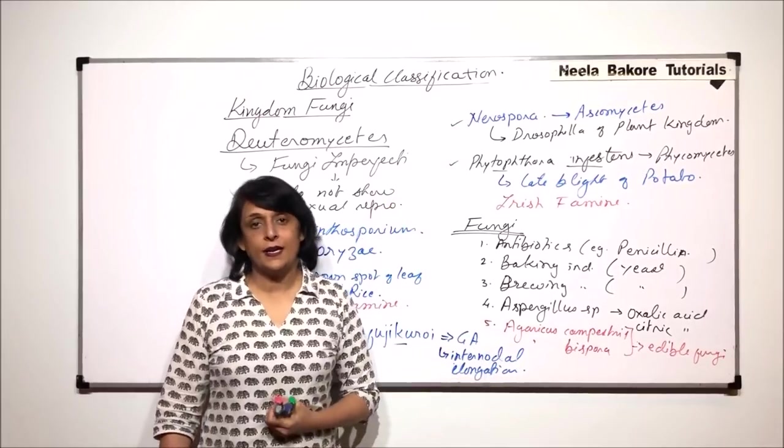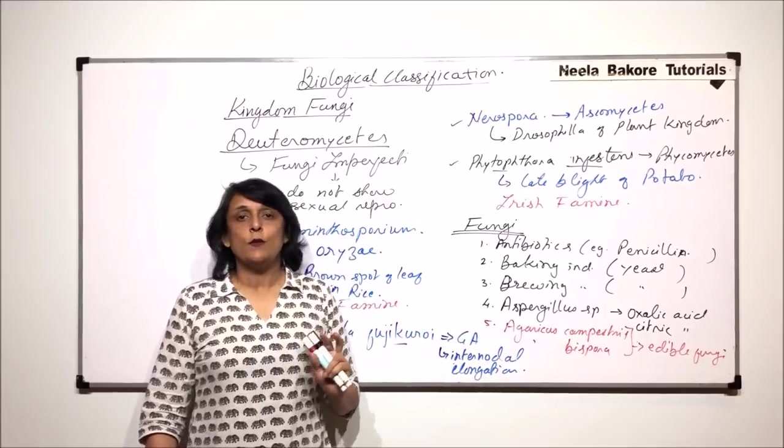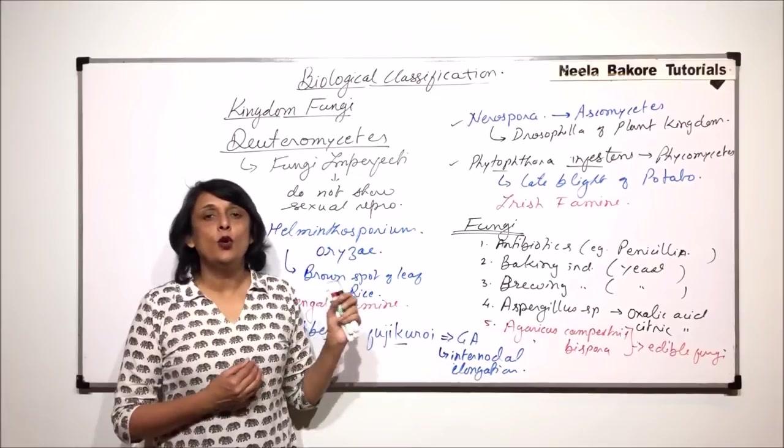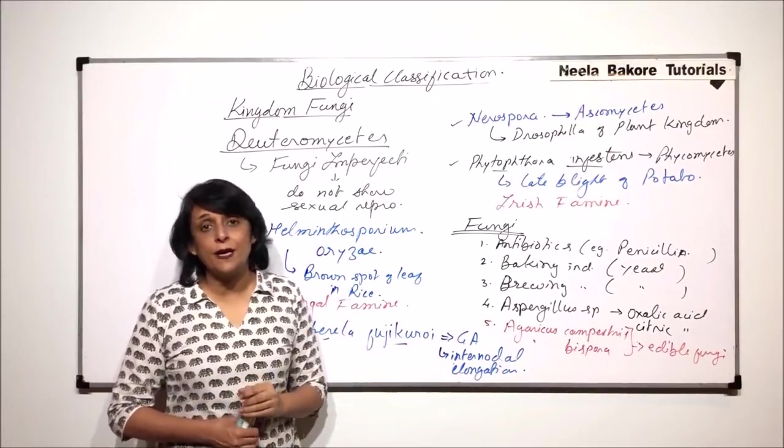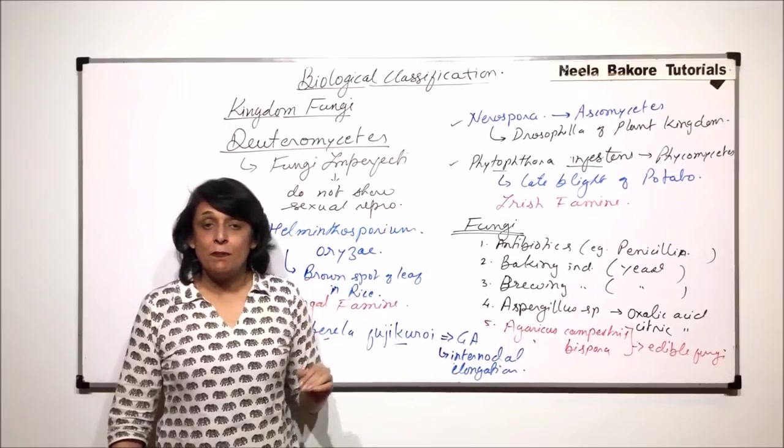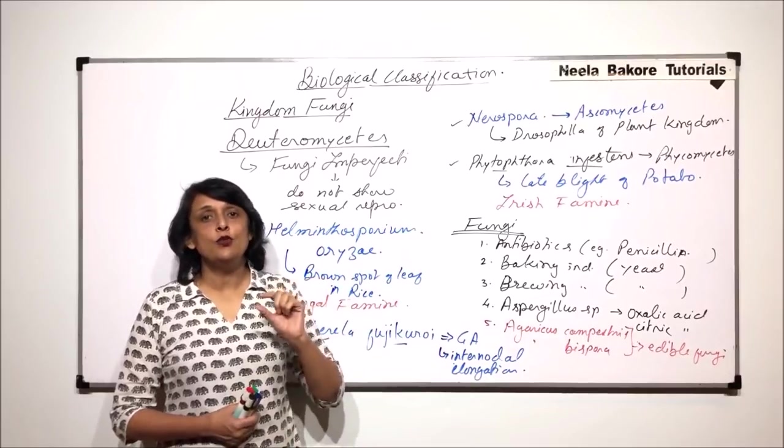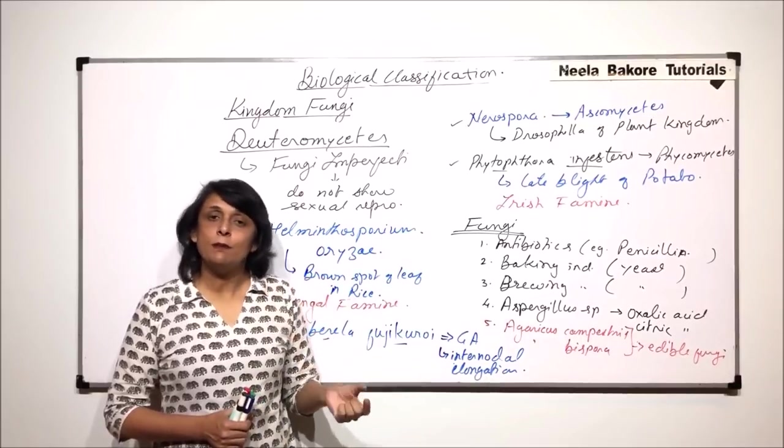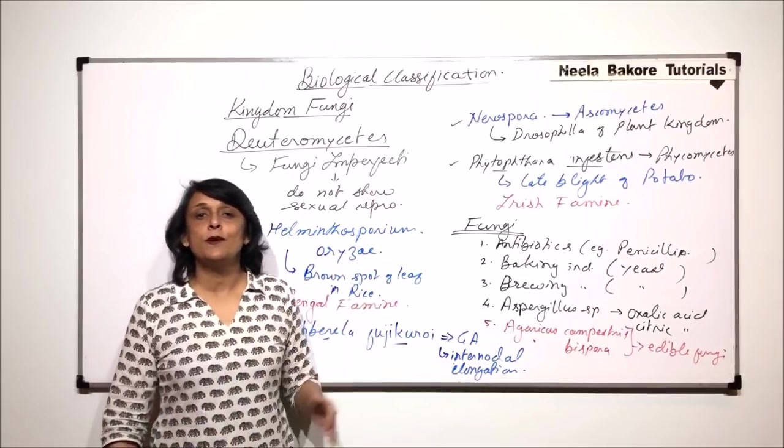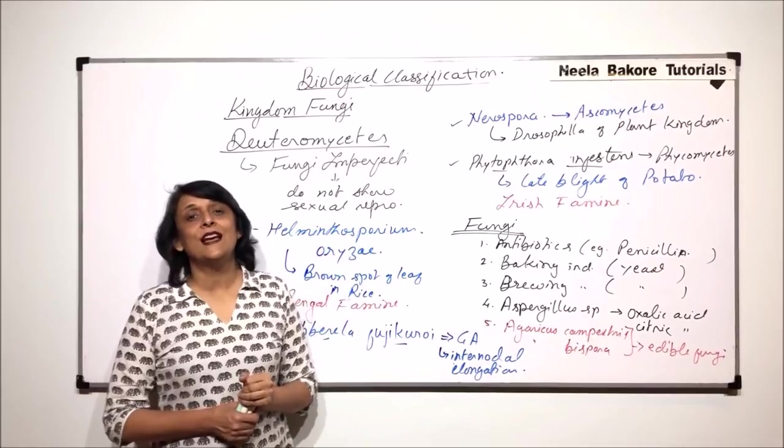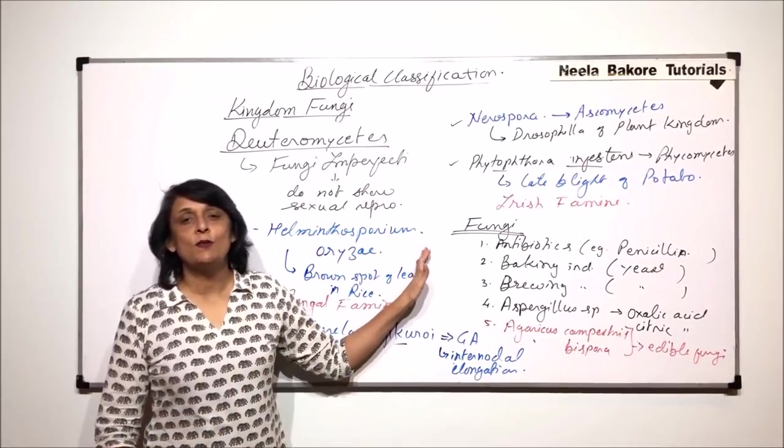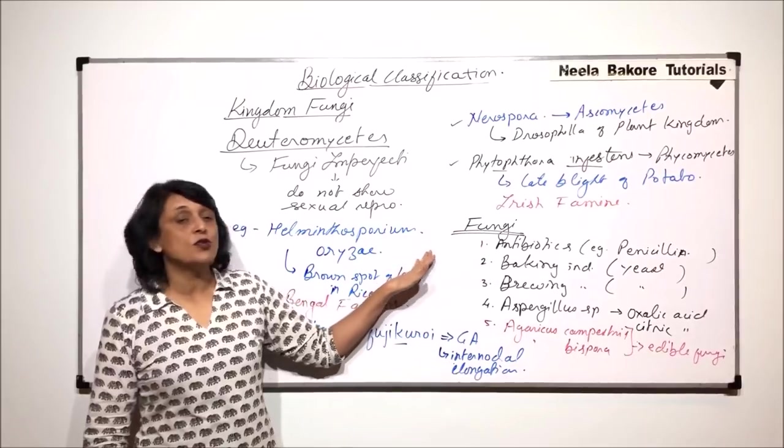So when we talk of Kingdom Fungi, there can be simple lower fungi which do not have septa to highly evolved fungi which have septa. They can have uninucleated compartments or dikaryotic compartments. And on the basis of reproductive structures we have classified them into various categories like Ascomycetes, Basidiomycetes, and so on.